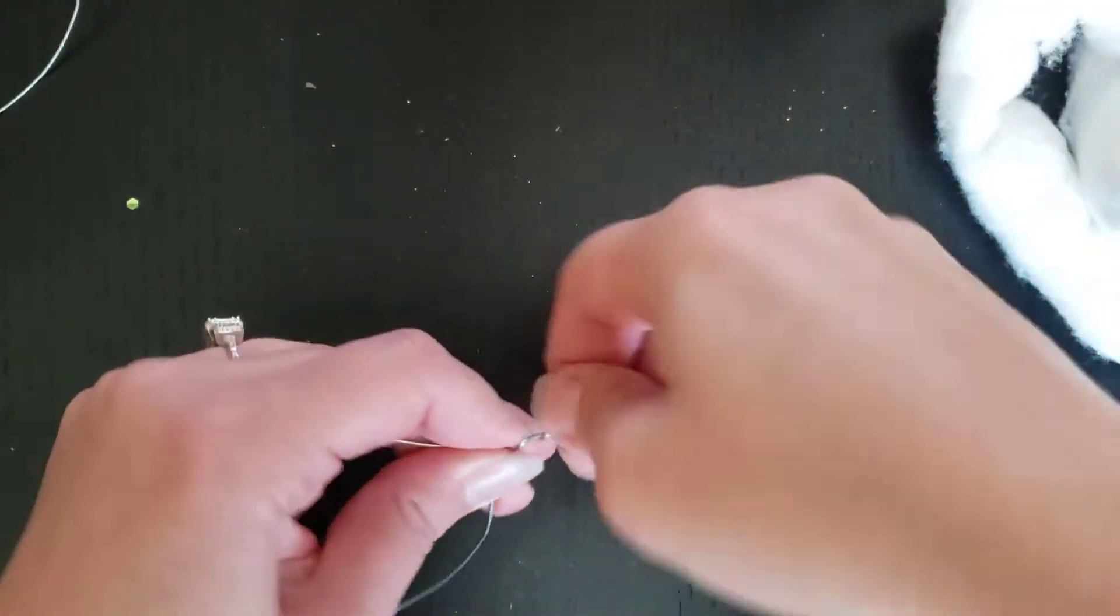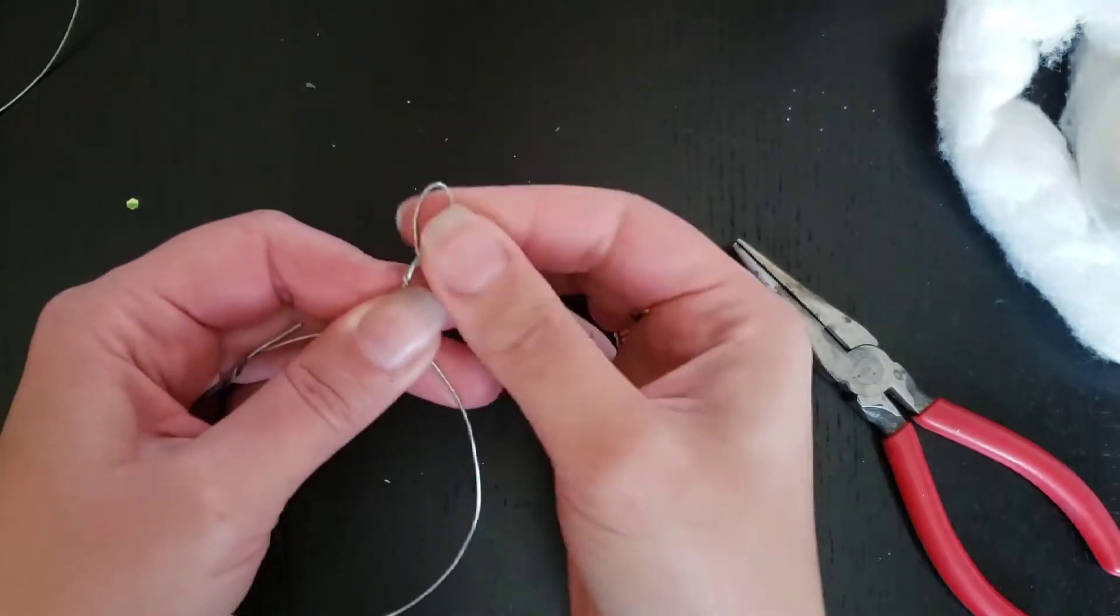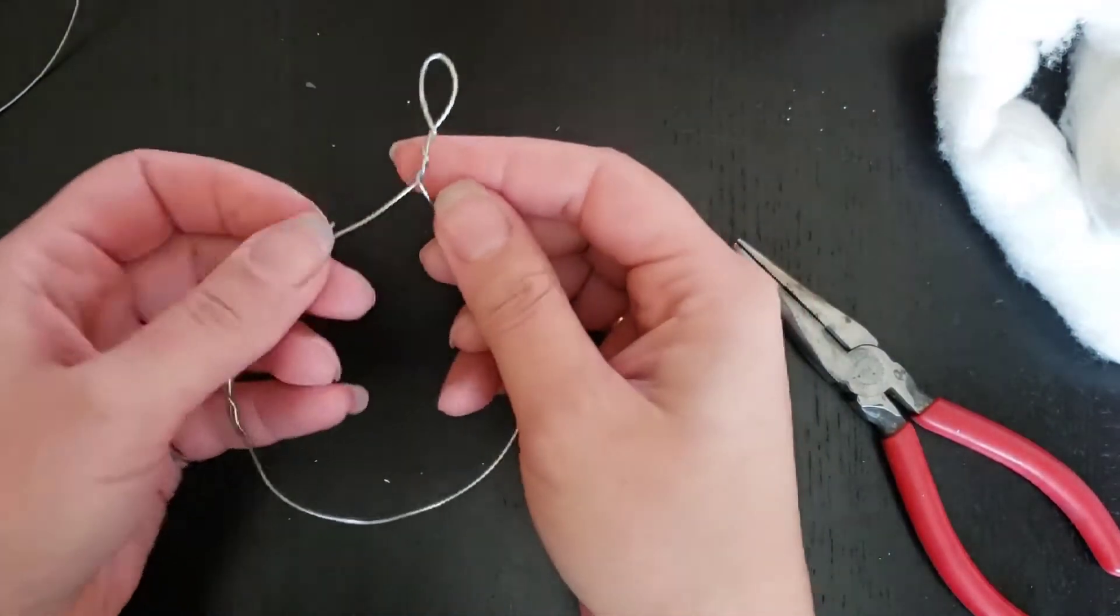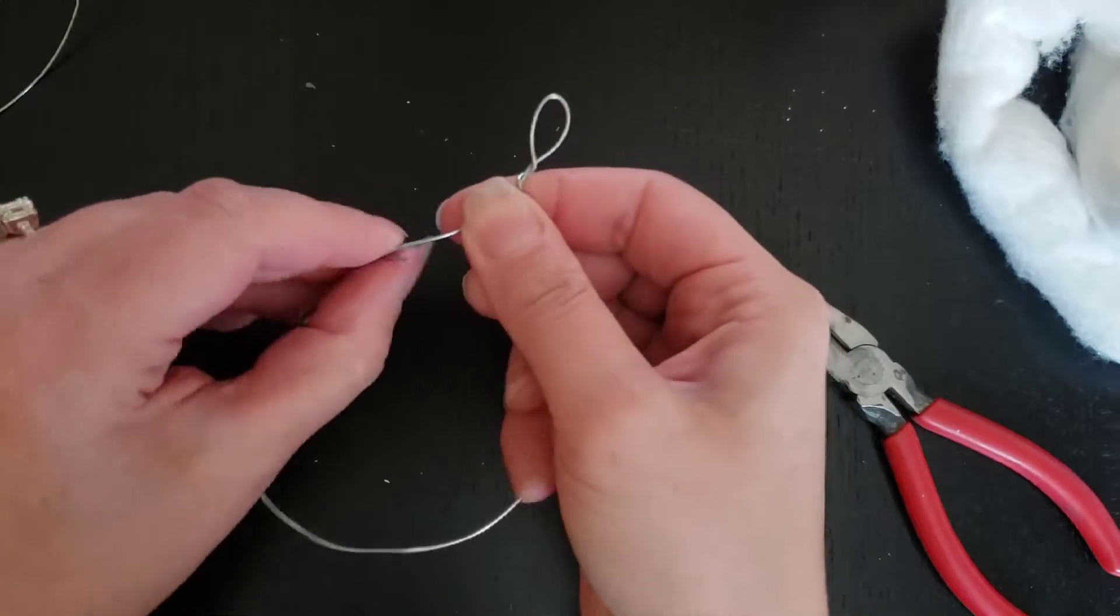Your loop at the top, you want to look fairly nice because that's what you're going to see. This is the part you're going to use to hang your ornament when it is completed.